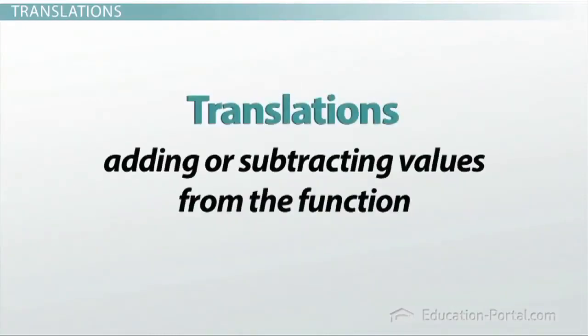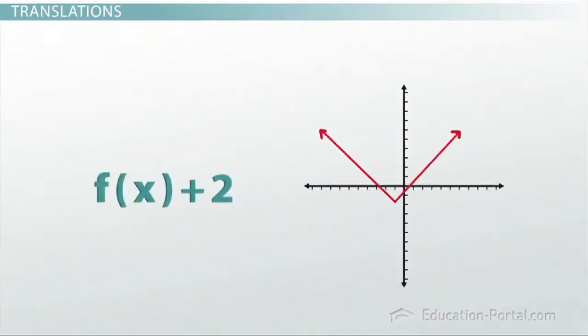Translations are accomplished by adding or subtracting values from the function. Adding outside the f of x shifts the graph up, which implies that subtracting outside the f of x would shift it down. Subtracting inside the f of x shifts the graph to the right, which implies that adding inside the f of x would shift it left.